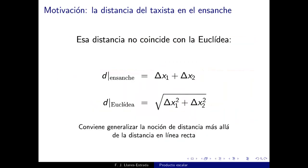Esta distancia del taxista o distancia del ensanche no coincide con la distancia euclídea. La distancia del ensanche es |Δx₁| + |Δx₂|, mientras que la distancia euclídea, dada por el teorema de Pitágoras, es √(Δx₁² + Δx₂²), que sería la distancia en línea recta entre los dos puntos.